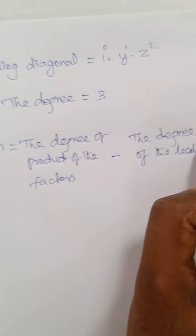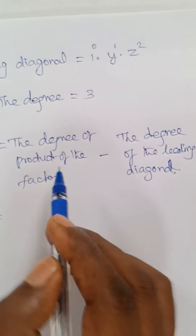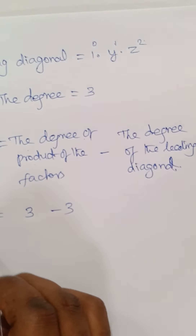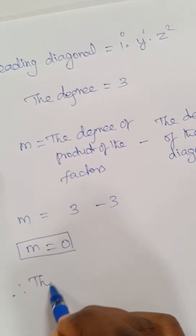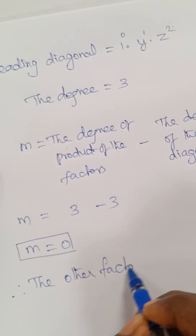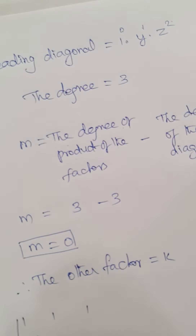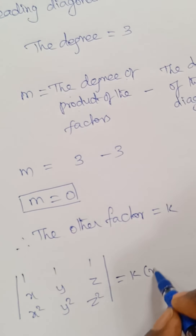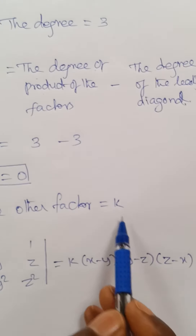So m equals the degree of the product of the factors minus the degree of the leading diagonal, which is 3 minus 3 = 0. Since m equal to 0, the other factor is k (a constant). So we can write: determinant of [1,1,1; x,y,z; x²,y²,z²] = k·(x−y)(y−z)(z−x).